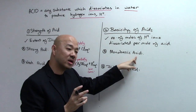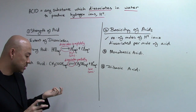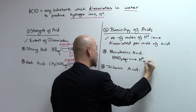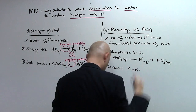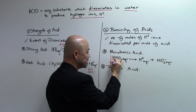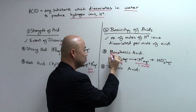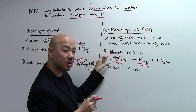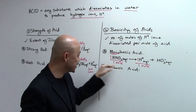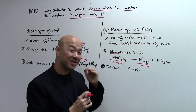For monobasic acid, we've already discussed one example — hydrochloric acid, HCl. Another common one is nitric acid, HNO3. When nitric acid dissociates, for every one mole of HNO3, it produces one mole of H-plus ions. Because one mole of the acid gives one mole of H-plus ions, we call it a monobasic acid.